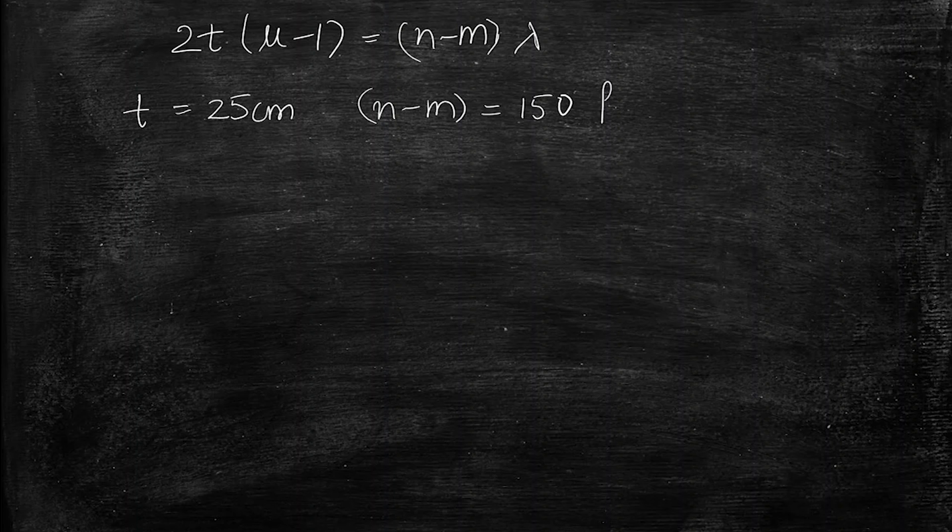So we are having this lambda. So we are giving the length of the tube as 25 cm. So mu is the refractive index, n minus m is 150 fringes, and we have lambda is equal to 5890 angstrom. So we have to find out the mu.